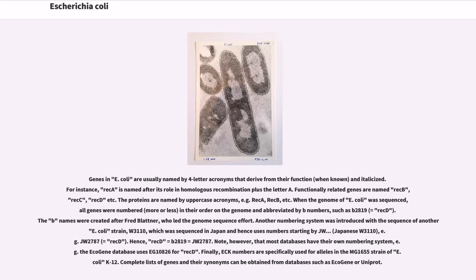Genes in E. coli are usually named by four-letter acronyms that derive from their function and are italicized. For instance, recA is named after its role in homologous recombination; functionally related genes are named recB, recC, recD, etc. The proteins are named by uppercase acronyms, for example RecA, RecB, etc. When the genome of E. coli was sequenced, all genes were numbered in their order on the genome and abbreviated by b numbers, such as b2819. The b names were created after Fred Blattner, who led the genome sequencing effort. Another numbering system was introduced with the sequence of another E. coli strain, W3110, which was sequenced in Japan and hence uses numbers starting with JW, for example JW2787. Hence, recD = b2819 = JW2787.